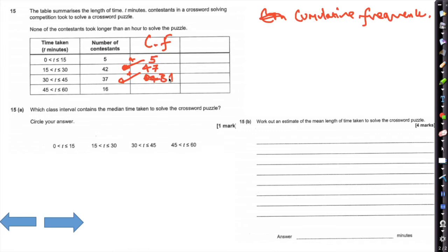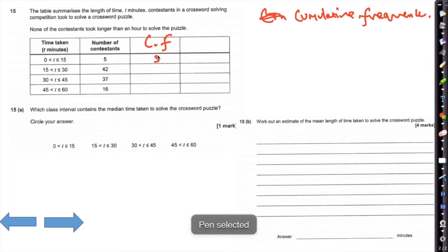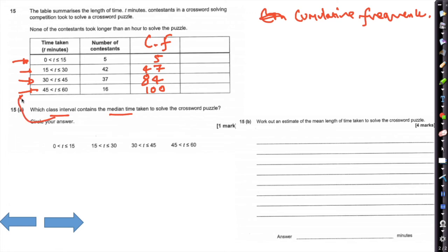As there are 100 people, the median is where the 50th person lies. The 47th and below are in the previous class, but this goes up to 84 — so the 50th person must lie in the class interval 30 to 45 minutes.